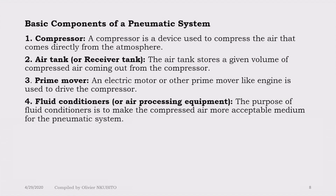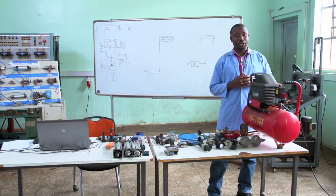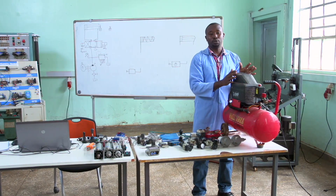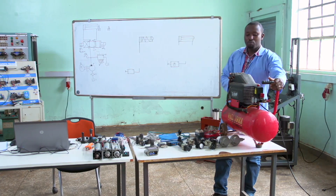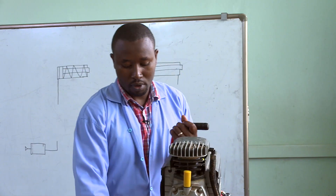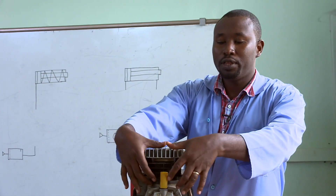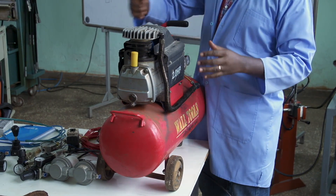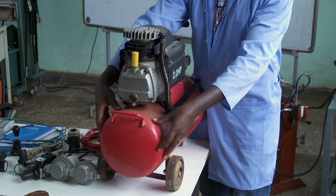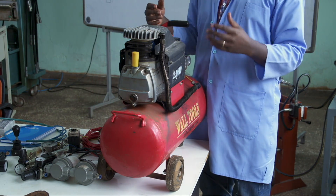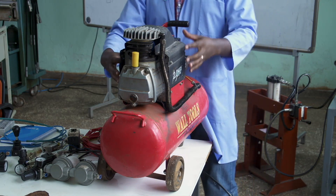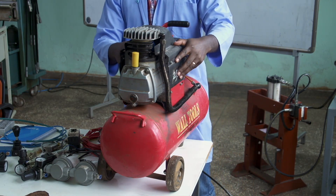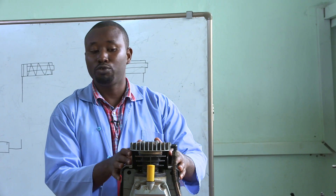Now let's look at the basic components of a pneumatic system. We have the compressor, which is the pressure source that compresses the air. We also have the air receiver, or tank, which stores the compressed air. And we have the prime mover — which may be an electric motor or an engine — that provides mechanical motion to drive the compressor.